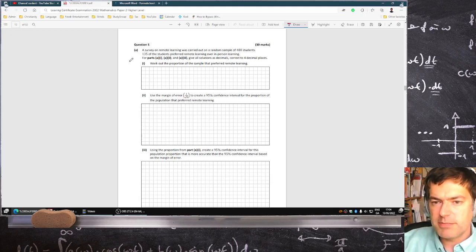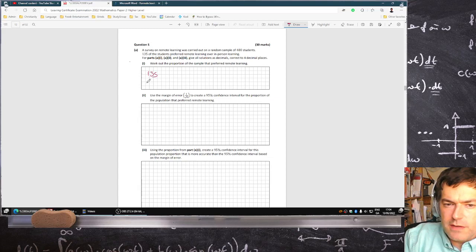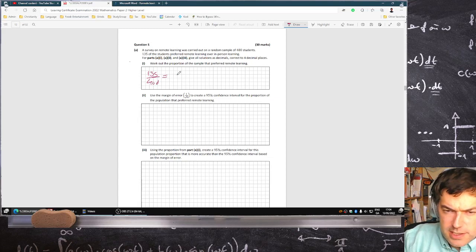Work out the proportion of the sample that preferred remote learning. 135 over 400 to four decimal places equals 0.3375.